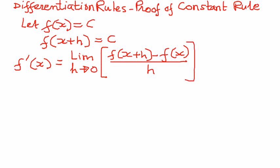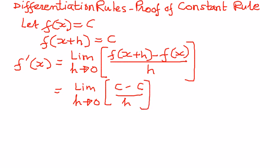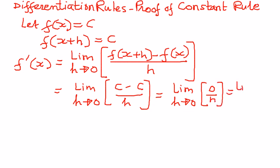According to what we have seen, f of x plus h for a constant function is also equal to c. Therefore we can write this as the limit as h approaches 0 of c minus c divided by h. Since c minus c equals 0, this simplifies to the limit of 0 divided by h, which is 0.